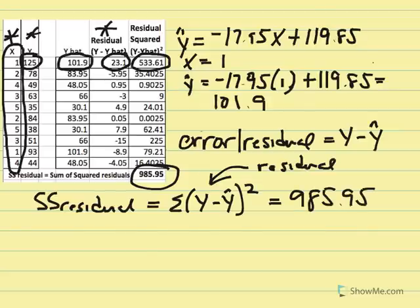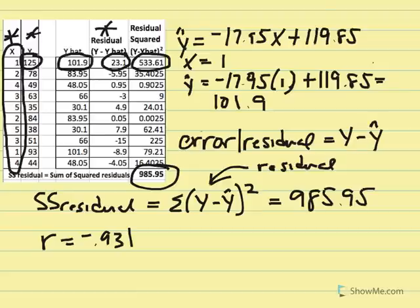There's another equation to calculate SS residual. The purpose of calculating this is recognizing that R equals negative 0.931 — a very strong correlation, but not equal to negative 1. Therefore, our predictions are somewhat off. We're going to use SS residual to calculate the standard error of the estimate — the average difference between our actual value and the predicted value — which we can add to our regression equation for accuracy.